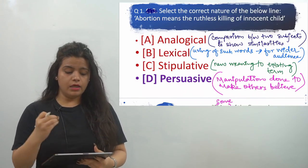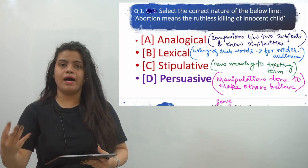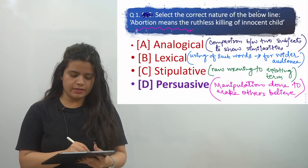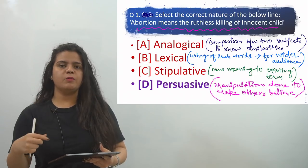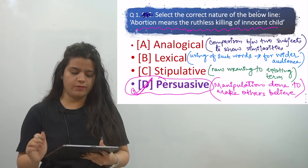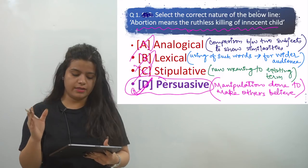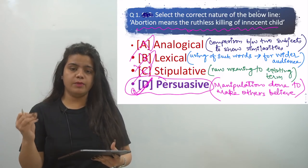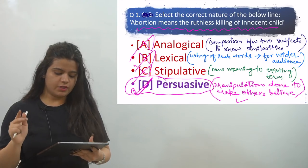So the answer is persuasive, because here we are trying to persuade and manipulate someone to make others believe that if you have an abortion, it means ruthless killing of innocent child. This is called persuasive — it can't be analogical, it can't be lexical, and it can't be stipulative. The first question's answer is persuasive, because manipulation has been done here to make others believe what you think.